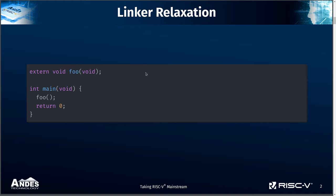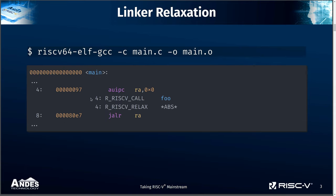So what is Linker Relaxation? To illustrate that, we will start with an example. This is C code where we define a main function, and inside this main function we call another function FOO. This FOO function is defined externally, outside of this file's translation unit, so we cannot see its definition here. If we ask the compiler to compile this file, the compiler has to generate code to invoke this FOO function, but it does not know where this function will be placed eventually. So to be on the safe side, the compiler will generate code with the largest possible range using an AUIPC and JALR instruction. It also puts a RISC-V relocation here to tell the linker that the linker should relocate the call to FOO.